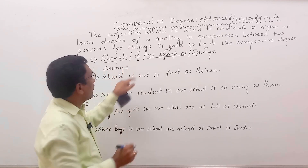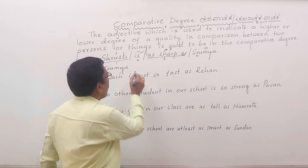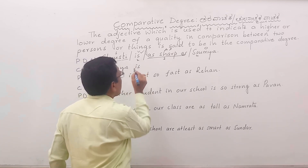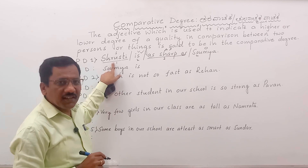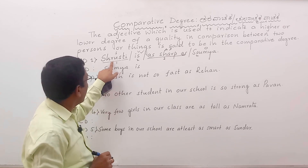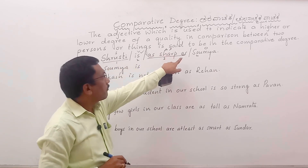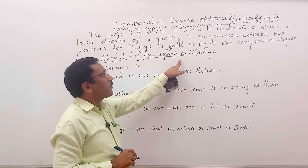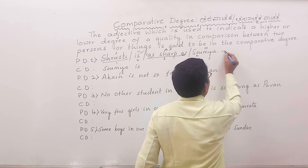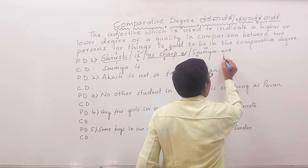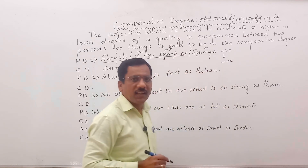After writing the object, we have to take the verb. The verb here is 'is'. Now look at the beginning of the positive degree sentence — Srasti is there, Srasti is a noun. The full sentence is: Srasti is as sharp as Somya, and this sentence is positive. When you change the sentence into comparative degree, it becomes negative.